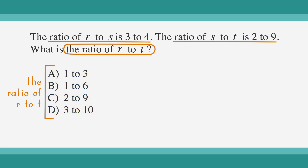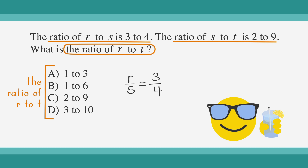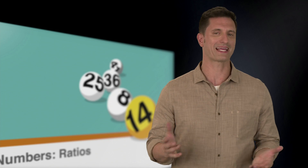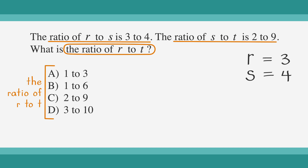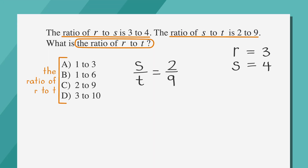Let's start with the first thing we're told: the ratio of r to s is 3 to 4. Based on this, we can go easy on ourselves and say that r is equal to 3 and s is equal to 4. We can pick any multiples of 3 and 4, but let's stick with 3 and 4. Now let's look at the next bit of information: the ratio of s to t is 2 to 9. If we set this up as an equation, we get that s over t equals 2 over 9. Since we set s equal to 4, let's plug that in. That way, we get 4 over t equals 2 over 9.